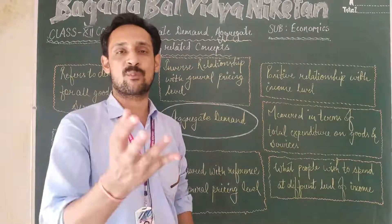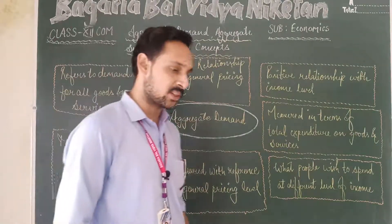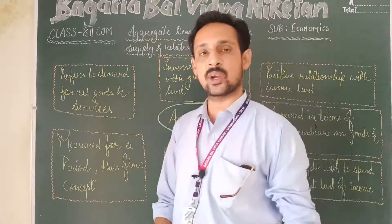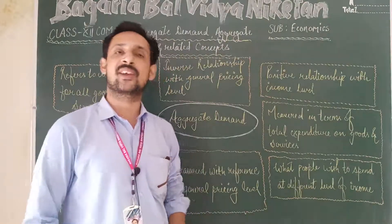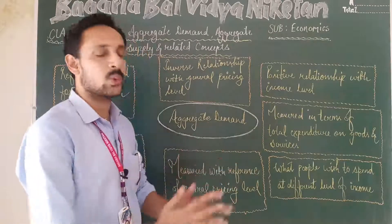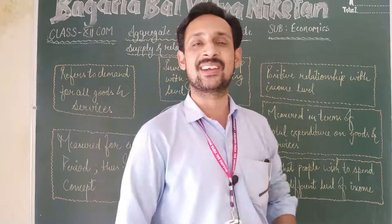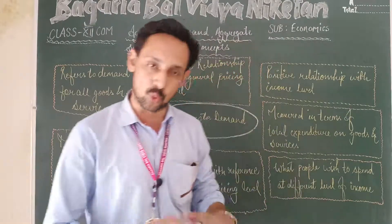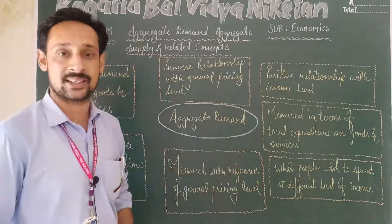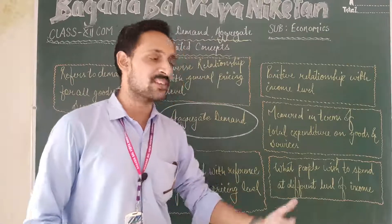We need to study the sum total of planned expenditures, which is why we study aggregate demand. Before 1921 — which is also known as the 'transition period' — if we talk about India's health parameters, both the death rate and birth rate were high in India.